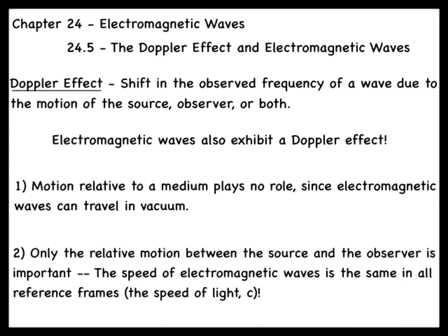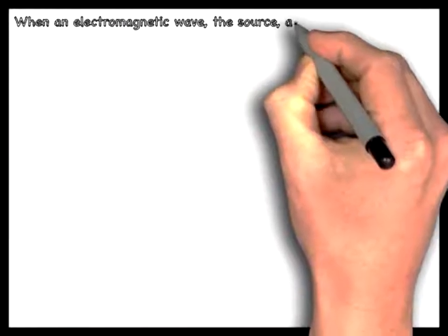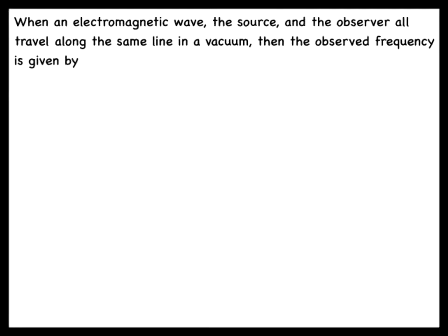When an electromagnetic wave, the source, and the observer all travel along the same line in a vacuum, then the observed frequency is given by the following.